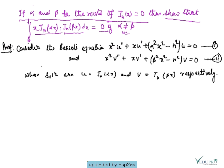For the proof, we consider two basis equations. First: x²u'' + xu' + (α²x² - n²)u = 0, and second: x²v'' + xv' + (β²x² - n²)v = 0. It is obvious that the solutions of these two basis equations are u = Jn(αx) and v = Jn(βx) respectively.